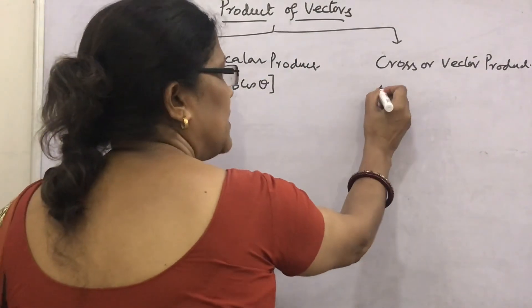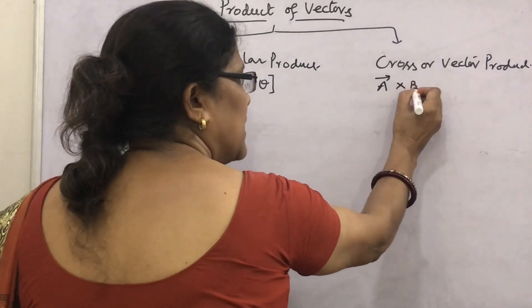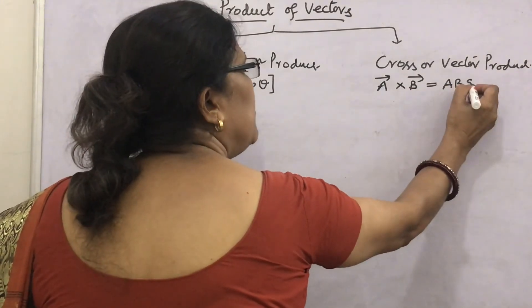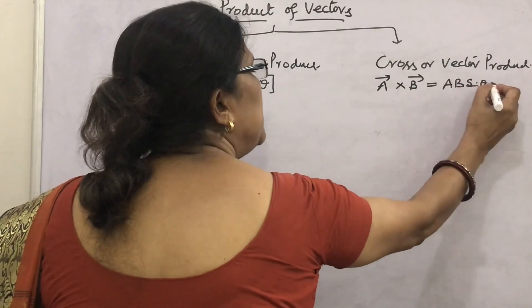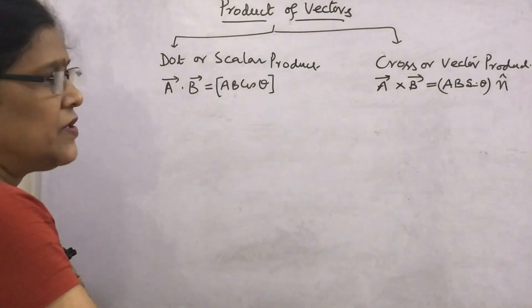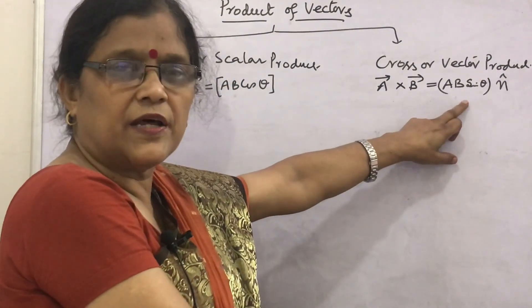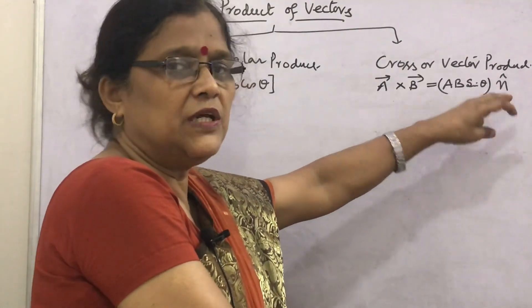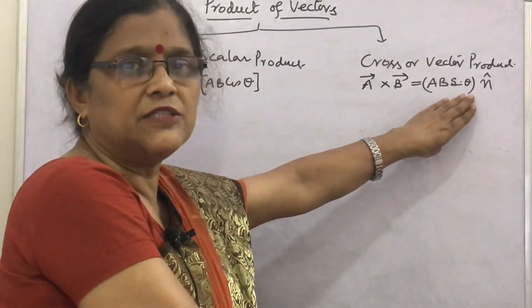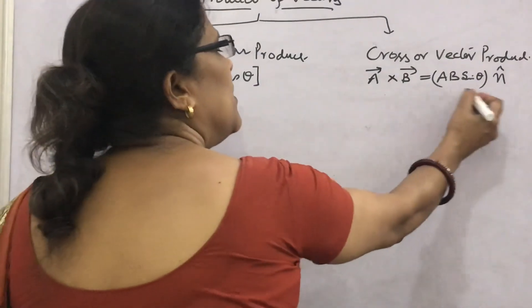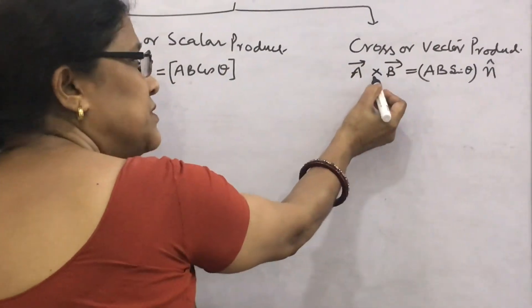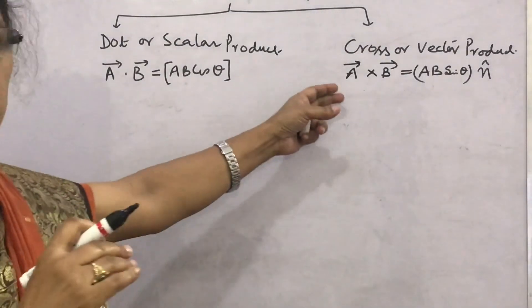For cross or vector product, if two vectors at angle theta are multiplied by putting a cross, we get the resultant as ab sinθ into a unit vector. The quantity ab sinθ is a scalar, but the unit vector which is in a plane perpendicular to both a and b makes this product a vector. That is why its name is vector product, and its other name is cross product.